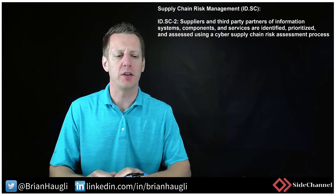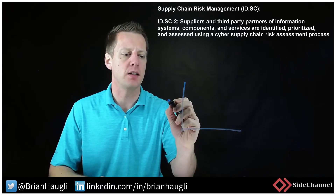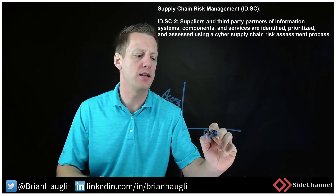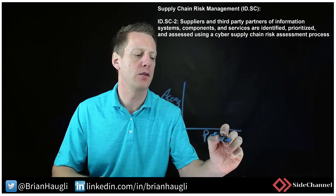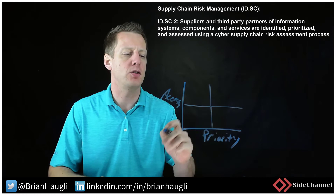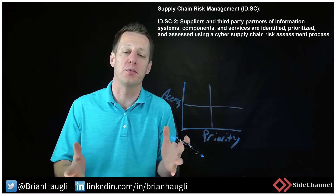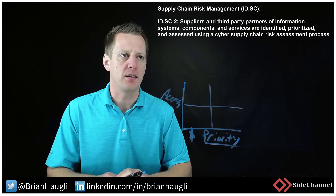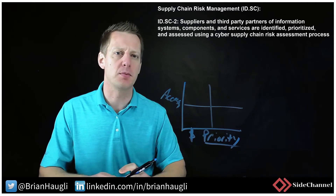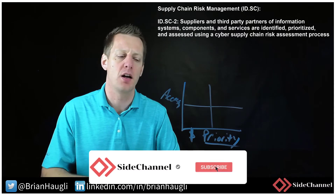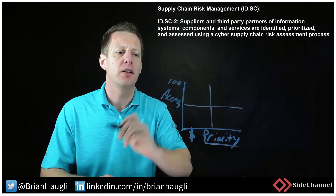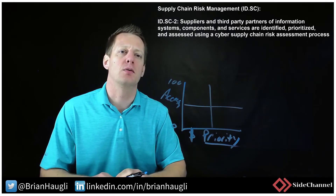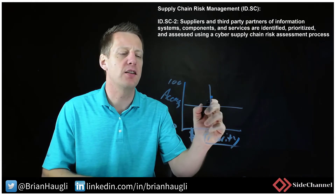What does a supply chain risk assessment process look like? I traditionally like to have an idea of the types of suppliers I have, what level of access they have to my organization, and how critical that access or that supplier is to my organization. Once we've identified all suppliers, we establish what their priority is — financial impact, capability they deliver, whatever that is. Then we establish access levels: are we talking about zip code data, or are we talking about our most important intellectual property?